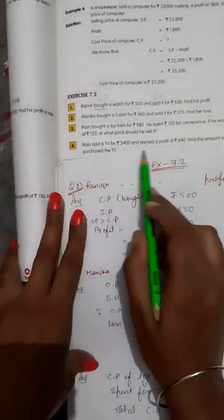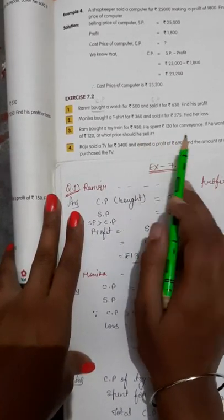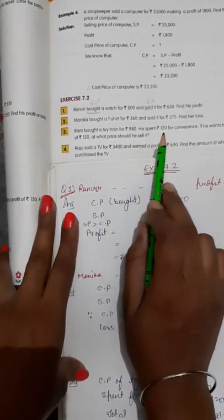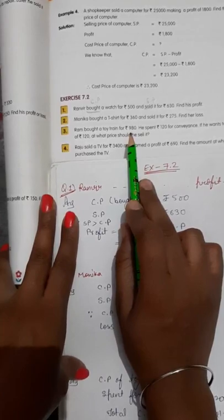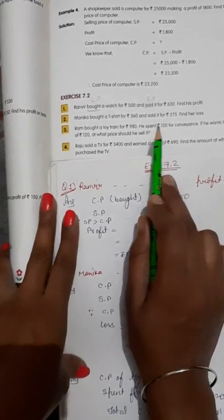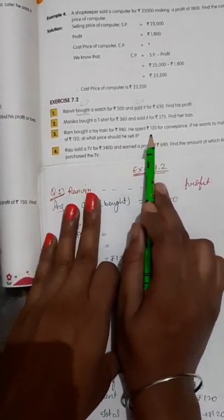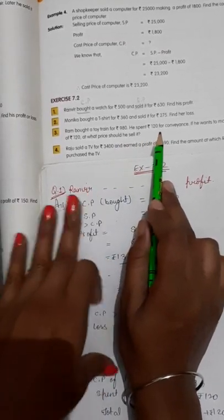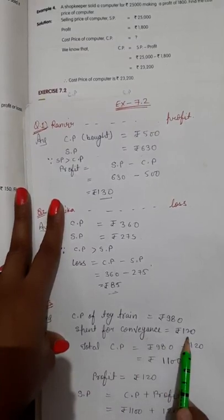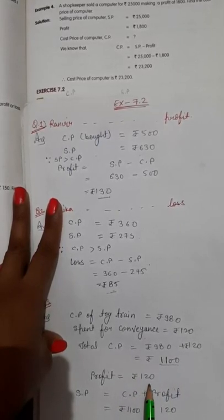Question number three: Ram bought a toy train for 980 rupees. He also spent 120 rupees on conveyance — that is the transportation expense to bring the toy. So this 120 rupees is included in the total cost price. CP of toy train is 980, conveyance expense is 120, so total CP = 980 plus 120 = 1100 rupees.